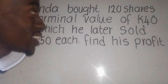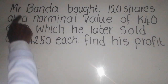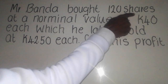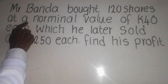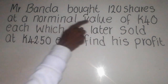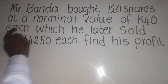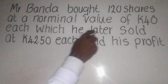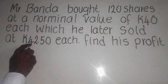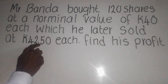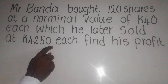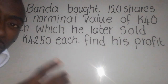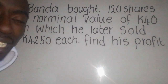The mathematics question says: Mr. Banda bought 120 shares at a nominal value of 40 quarter each, which he later sold at 42.15 where each. Find his profit.